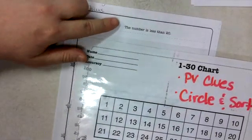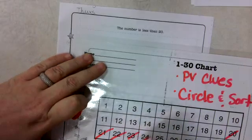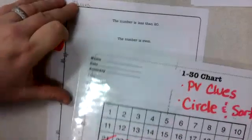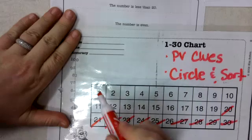The number's less than 20, so we'd go ahead and cross off any numbers 20 or above, since it cannot be 20 itself. The number is even, so now we'll cross off any odd numbers that we have.